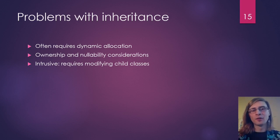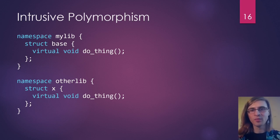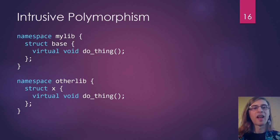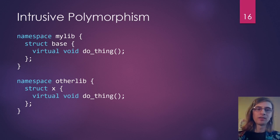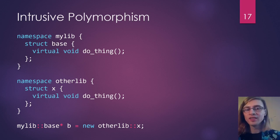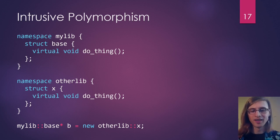Another problem is that inheritance is intrusive — it requires you to modify the child classes if you want to use it at all. Say I have a base class in my library and some other library has another class that corresponds to the correct interface. The base class has a 'do_thing' virtual function, and other_lib::X has a 'do_thing' function with the same signature. We might want to use X as a base, but we can't — that line will not compile because other_lib::X does not inherit from my_lib::Base. Maybe we can change other_lib::X, maybe we can't — maybe it's code we don't own. So we have to write wrapper classes, which is possible but it's more code, more work, more things to maintain and get wrong.